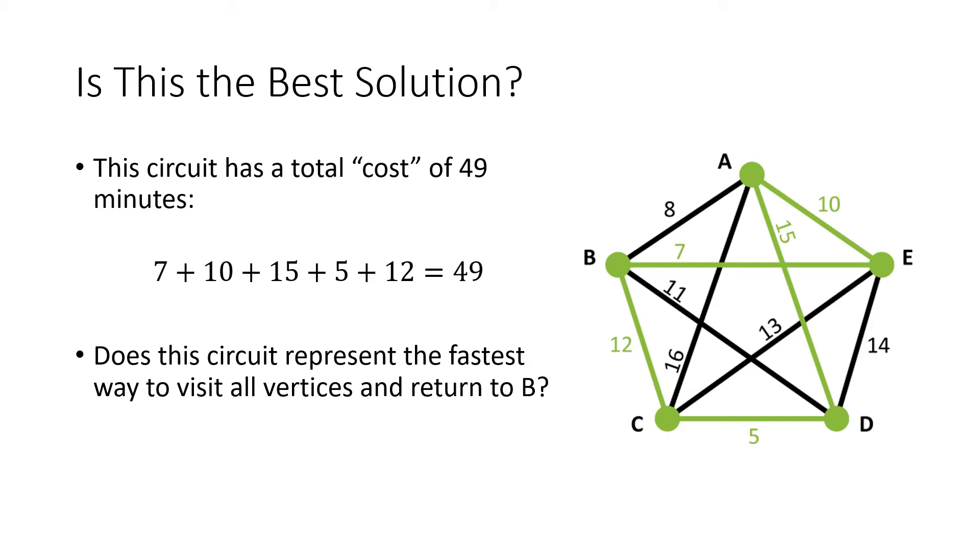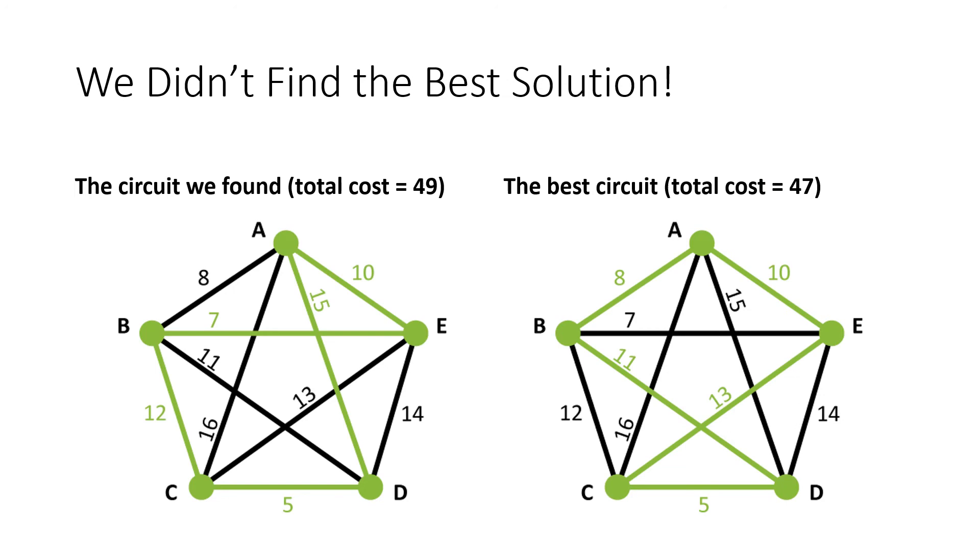But unlike the brute force method, because we didn't look at all possible solutions, we don't know if this is the best solution. We don't have any way of knowing how this compares to the different ways that we could have walked through these five vertices. And it turns out that we didn't find the best solution. We don't really have a good way of knowing this without going back and using the brute force method. But it does turn out that there is a slightly better circuit that only costs 47 rather than the 49 that we found. So again, there's a trade off here using this nearest neighbor algorithm.